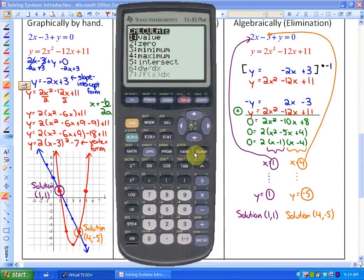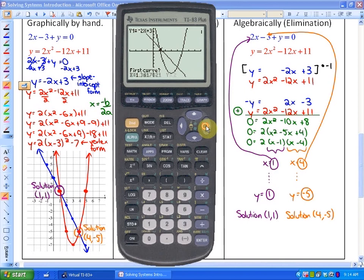Just press 2nd, calculate, intersect again. And I'll go close to the second intersection point. And we should get the solution 4, negative 5 as we already anticipate. In this particular lesson, we should get the same answer no matter which way we approach this. So there's the point 4 and negative 5 as far as our solution goes.